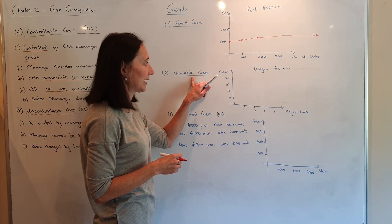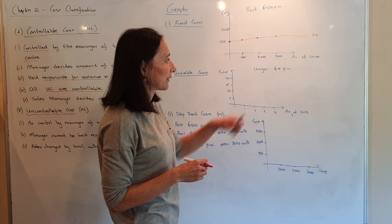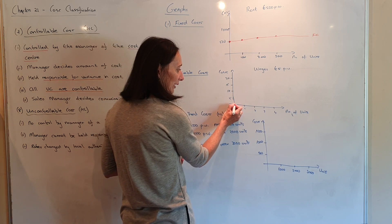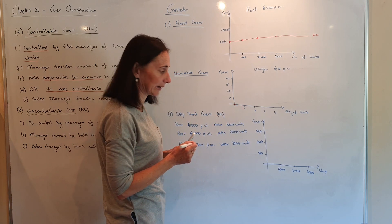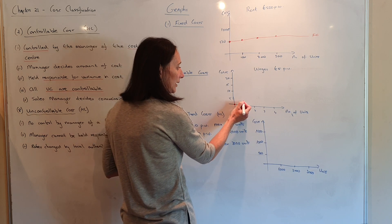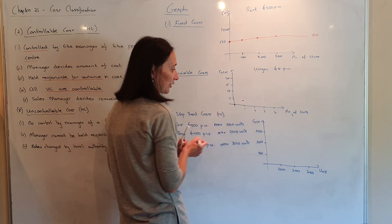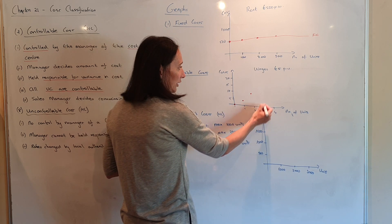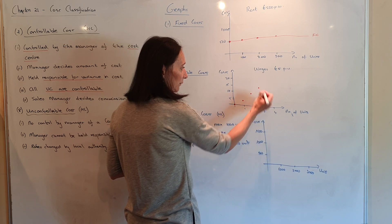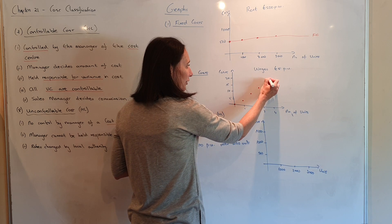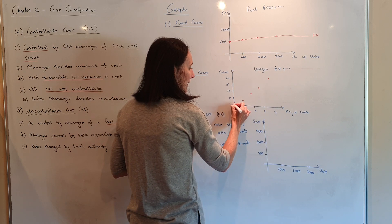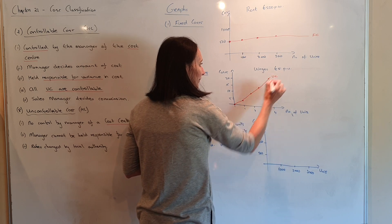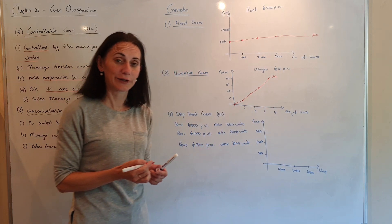Now let's look at variable cost — wages of €5 per unit. If I don't make anything, I don't pay any wages, so it starts at the origin. If I make one unit, I pay €5 in wages; two units, €10; three units, €15; four units, €20. So your variable cost curve goes up — the more you make, the more your variable costs will be.